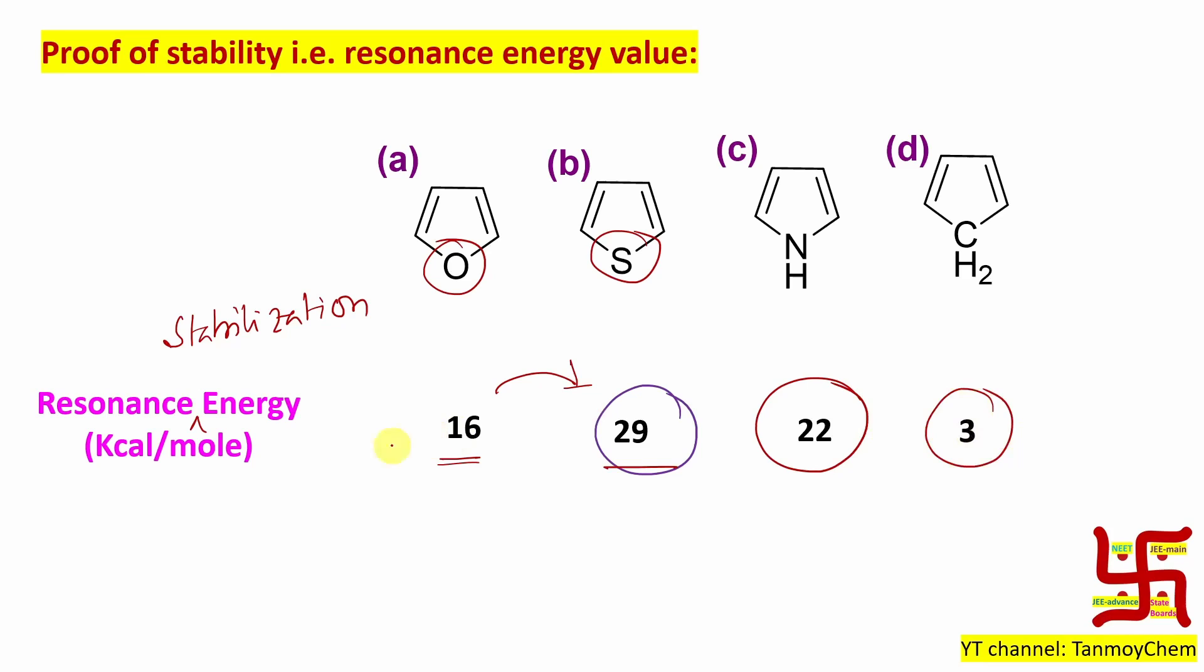Sometime before I told you diene resonance is not that much. See here, the energy is 3 kilocalories per mole. Diene has delocalization, but that doesn't come close to aromaticity. Aromaticity means extremely high delocalization or resonance, so stabilization is also higher.